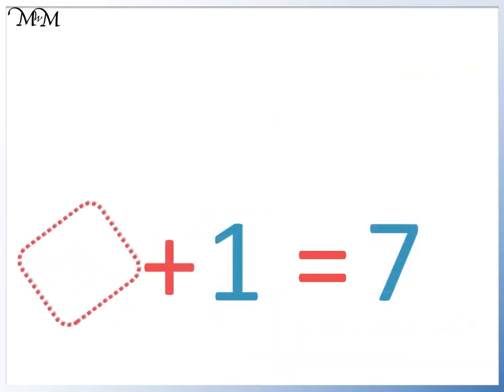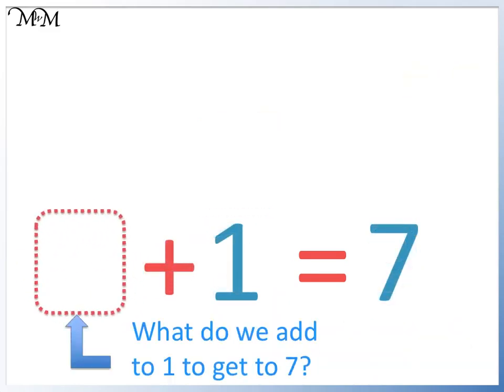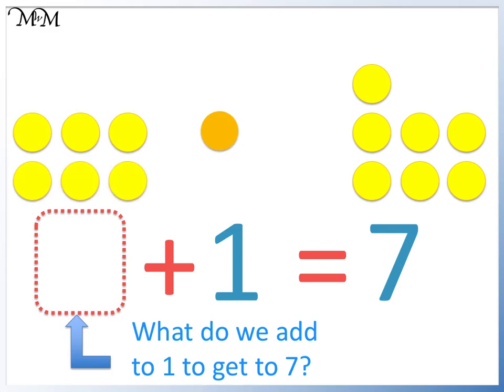Here we are asked, what do we add to 1 to make 7? Here is 1, here is 7. We have 1, 2, 3, 4, 5, 6, 7. We have added 6. Or we can do 7 take away 1 to leave 6.